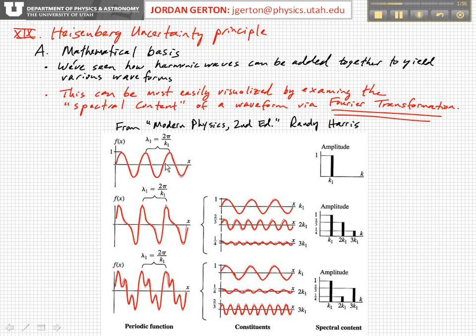This is a single wave, a single harmonic wave, and so it has a particular wavelength equal to 2π over k. Lambda 1 equals 2π over k1. And in Fourier space, or in the spectral content, or in k space, wave number space, you can say that you have just a single component wave.